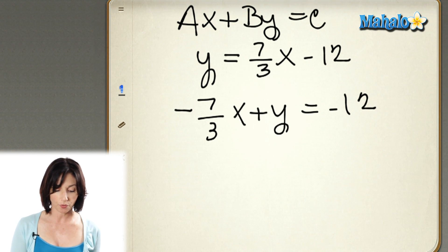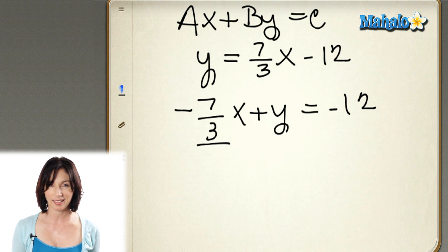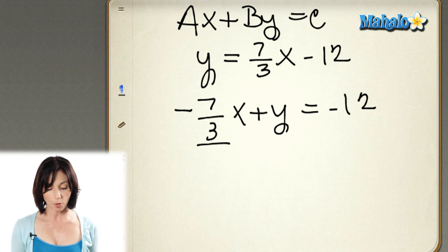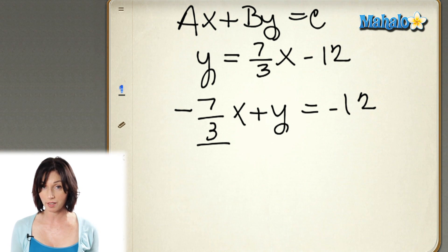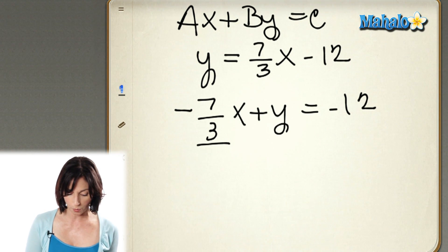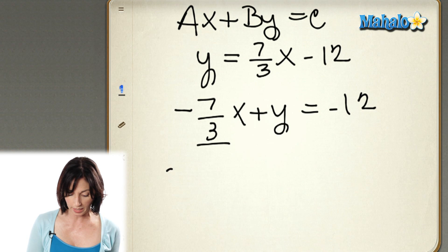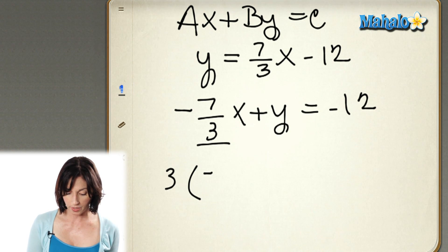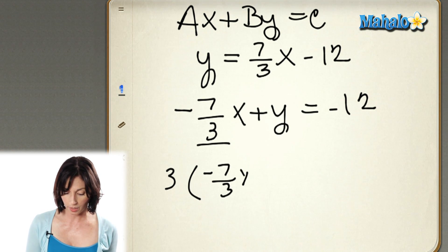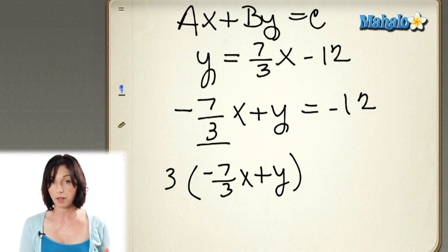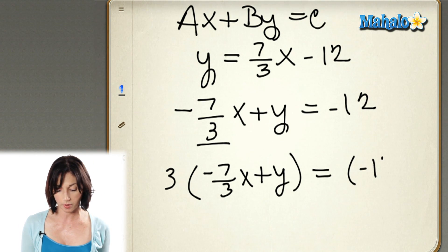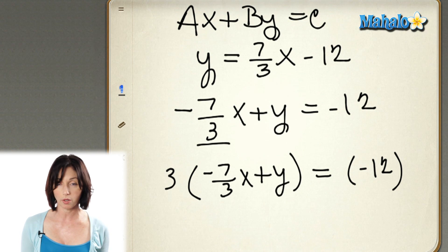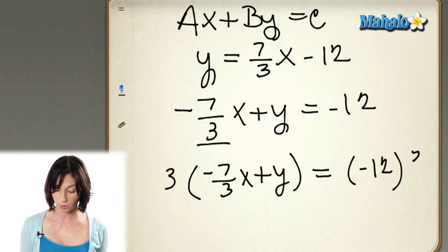But I have this fraction here in front of the x, and I don't really want it there. So what I'm going to do is multiply both sides of this equation by 3 — the number that's in the denominator of the fraction — to get rid of that fraction. So we're going to take 3 times negative 7 thirds x plus y, multiplying that whole thing by 3. And on the other side, I have to do the same thing, so I have to multiply negative 12 by 3 too.